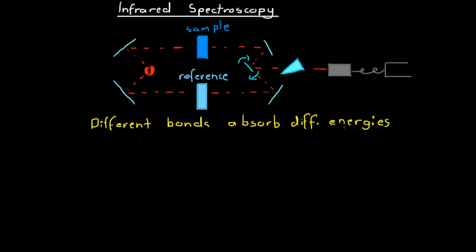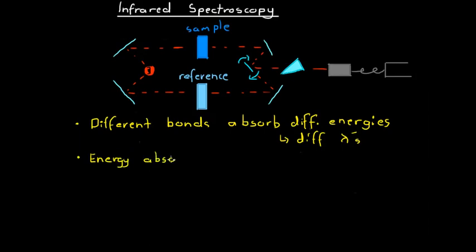Because different bonds absorb different energies, it means they absorb different wavelengths of infrared light — different wavelengths, denoted by lambda. The energy absorbed by a bond depends on a range of things, and these things contribute to how we can analyze and identify a substance using infrared spectroscopy.